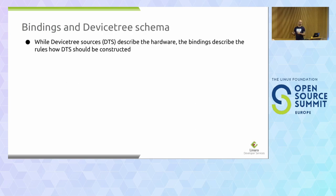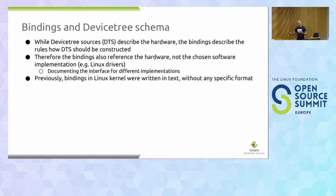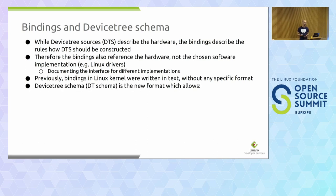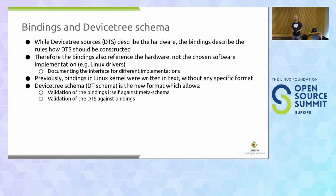The bindings in the device tree: DTS is the way we describe hardware for the Linux kernel and several other projects. The bindings are the rules for how DTS should be constructed. It also describes the interface because it's used for several different projects — it's not Linux-specific, not implementation-specific. For all the time, we wrote the bindings in text format without any structured way. The new way is the DT schema, which uses YAML as a language. It has several benefits: it allows us to validate the bindings against the core meta schema, and to validate device resources against the bindings.